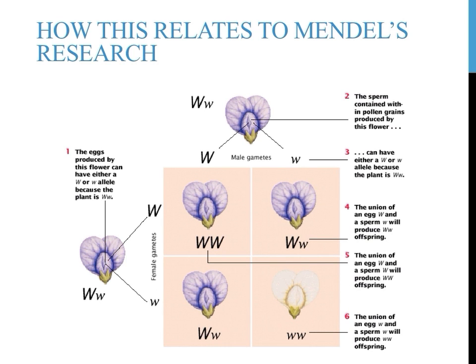When Gregor Mendel self-pollinated the heterozygous purple-flowered pea plants, as shown in the image here, he found a 3 to 1 ratio of purple to white flowers. Again, this graphic, and Punnett squares more generally, exhibit why this would have occurred. When you cross two heterozygous individuals, one in four would receive the recessive alleles from both of their parents, and they would exhibit the recessive phenotype.